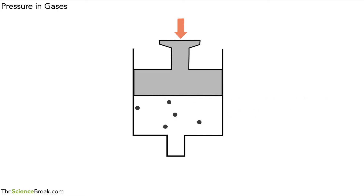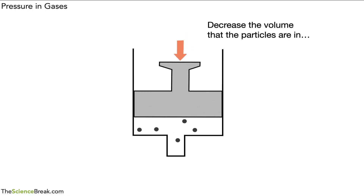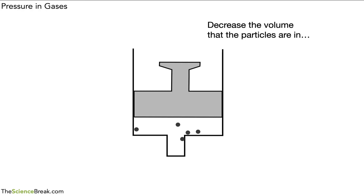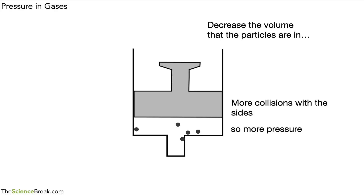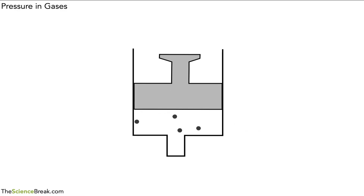We can see what happens if we decrease the volume that the particles are in. We've pushed the plunger down and decreased the volume. Now look at how the particles move — they move in the same way, however there are many more collisions with the sides of the container. Because there are more collisions, there is a higher pressure. So decreasing the volume increases the pressure inside a container that has gas.